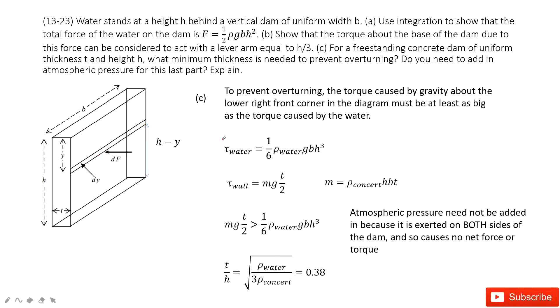The third one asks you to find the freestanding concrete dam of uniform thickness t. So t is given, h is given. Now, what is the minimum thickness needed to prevent overturning? So now we need to find this t. How much t should it be if there is no overturning? That means the torque from this concrete is larger than the torque from this water.